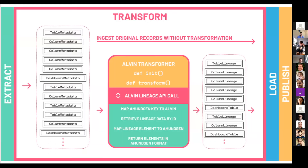For us, that meant calling our own lineage API. This graphic explains what our transformer does on a conceptual level. We extract from a service such as BigQuery or Tableau and receive table metadata, dashboard metadata, and column metadata objects, yield those, and then send them to our own API. Our API maps the Amundsen entity key, converts it to our own internal key, pulls all the lineage data we need, and returns it to Amundsen in a format it can understand — as table lineage, column lineage, and dashboard table objects.